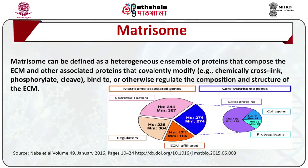Each anchoring junction requires a tri-molecular arrangement of adhesion proteins, adapter proteins and cytoskeleton filaments. Adhesive proteins in the plasma membrane establish connections between adjacent cells through CAMs or to the ECM through adhesion receptors. An in silico classification has been proposed for ECM and its associated proteins, referred to as the matrisome.